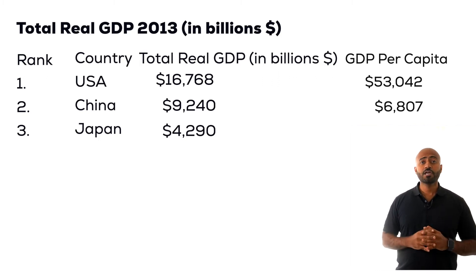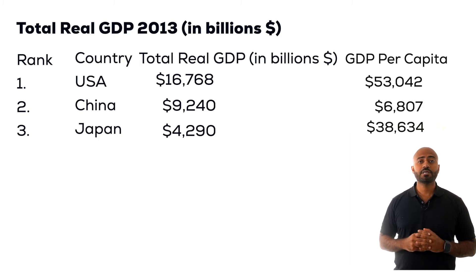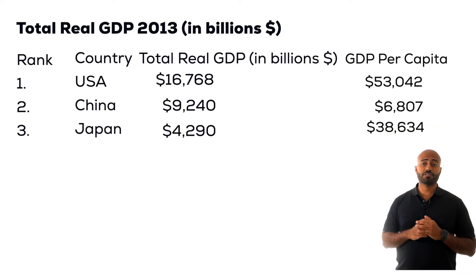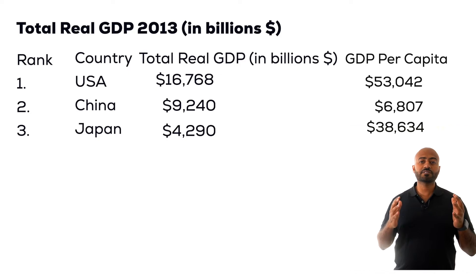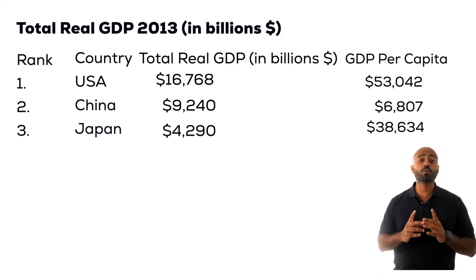On the other hand, Japan's real GDP per capita is $38,634 — a much smaller gap than indicated by total real GDP. So Japan, in terms of living standards, has a better living standard than China, although the total production and output is lower. Both total real GDP and real GDP per capita are important and tell us different things. However, it is important to be explicit about which measure we are using for the sake of comparison and accuracy.